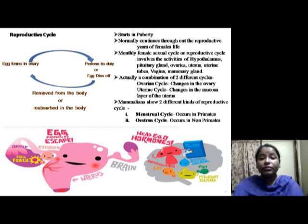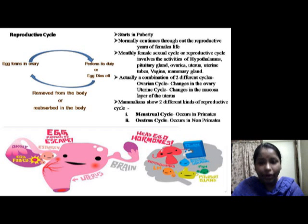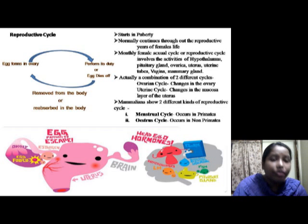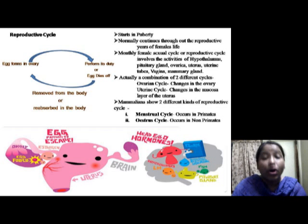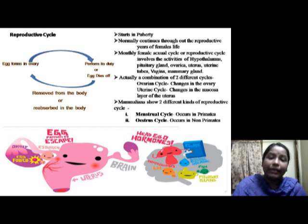The reproductive cycle includes ovarian phases — follicular, ovulatory, and luteal — and uterine phases — menstrual, proliferative, and secretory — which together are called the menstrual cycle. Follicle stimulating hormone, luteinizing hormone, estrogen, and progesterone play key roles. It occurs simultaneously in the ovarian and uterine cycles. A typical menstrual cycle in women is 28 days.